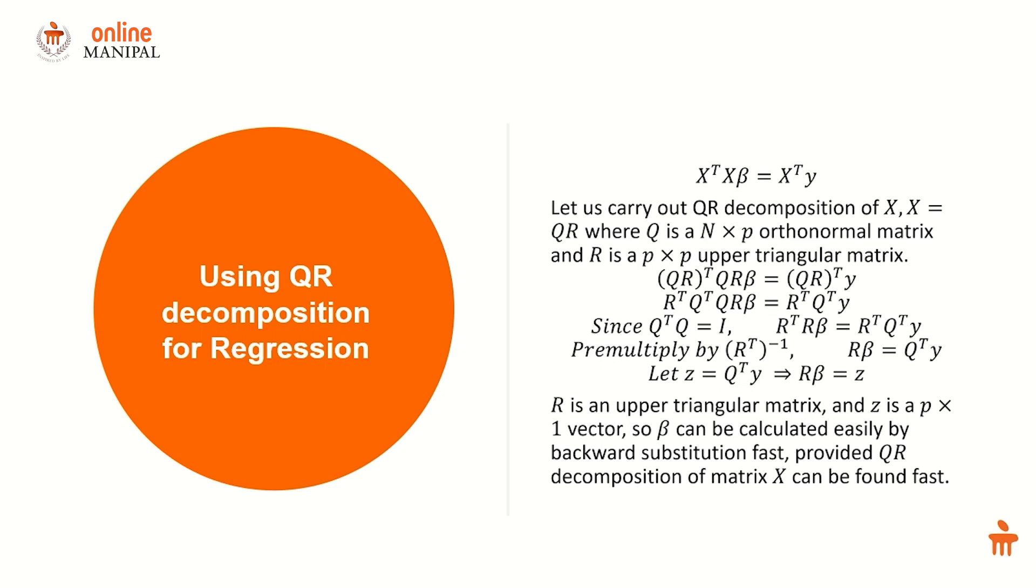I can write r beta equals z, and therefore I can write the whole system of linear regression equations as z equal to q transpose y. Now z is a p cross 1 vector and r is an upper triangular matrix.